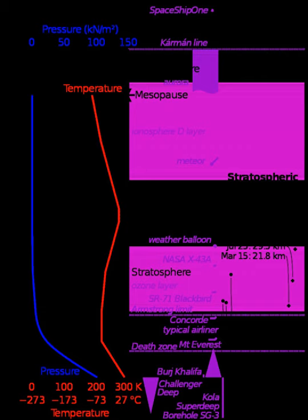The U.S. Standard Atmosphere is a set of models that define values for atmospheric temperature, density, pressure and other properties over a wide range of altitudes.